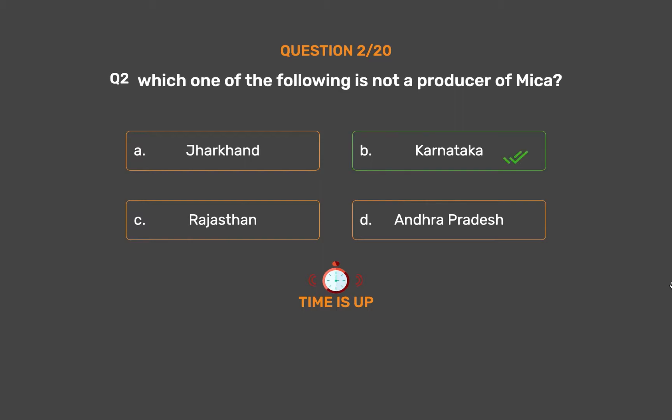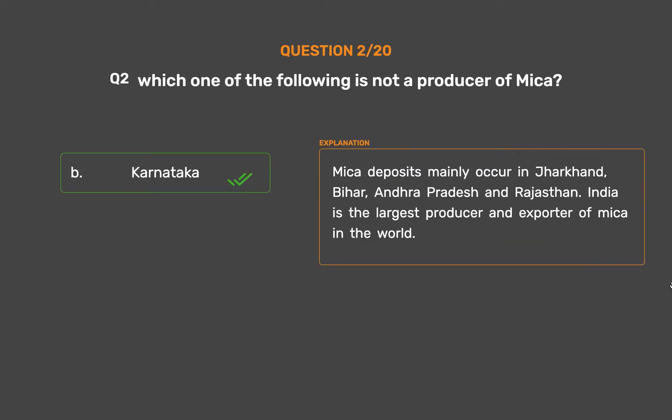The correct answer is Option B: Karnataka. Mica deposits mainly occur in Jharkhand, Bihar, Andhra Pradesh, and Rajasthan. India is the largest producer and exporter of mica in the world.